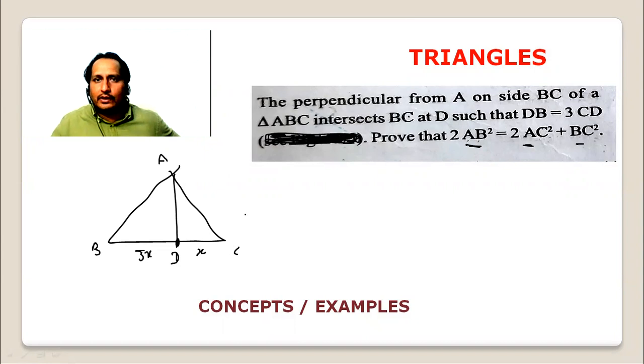Now prove that 2AB². AB² - this is perpendicular, so the value of AB² is equal to BC by 4, the whole square, plus AD². Now focus here.